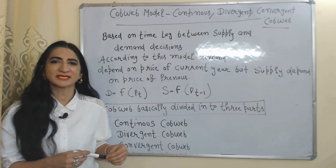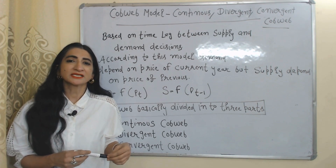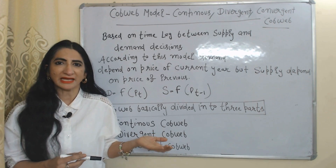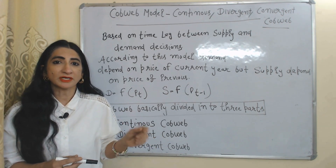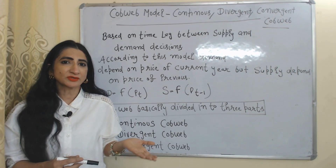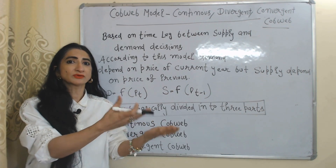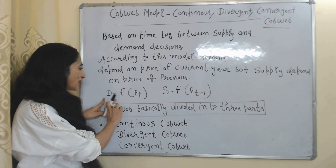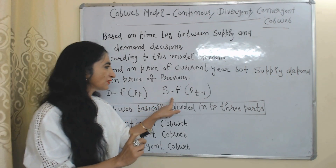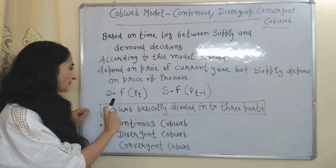Hello everyone, my name is Vinnie Sethi. I hope you all are staying healthy. Today we are going to talk about the Cobweb model. This model is based on the time lag between demand and supply. According to this model, demand depends on the current year price, but supply depends on the previous year price. That means demand is a function of current year price, but supply is a function of previous year price Pt-1.